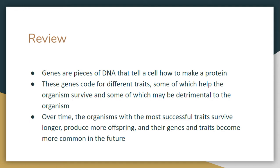What do you need to know before we can understand this new topic? As we have needed to know for this entire unit, genes are pieces of DNA that tell a cell how to make a protein. These genes code for different traits. When all of these different proteins get made, they have different effects on the organism. Some of these traits help the organism to survive, which we call being beneficial.